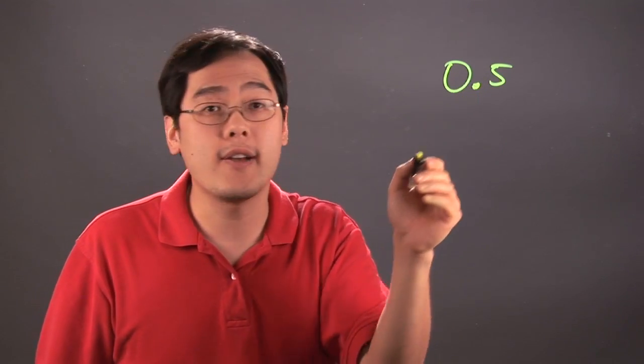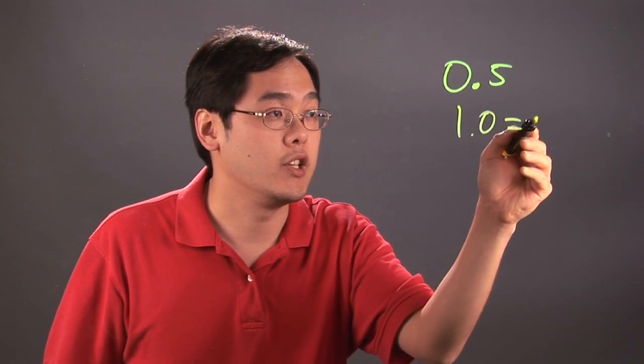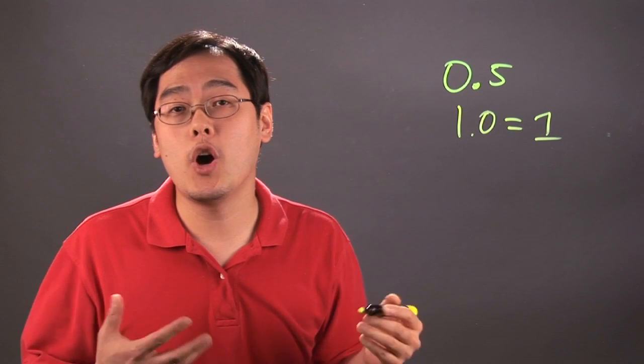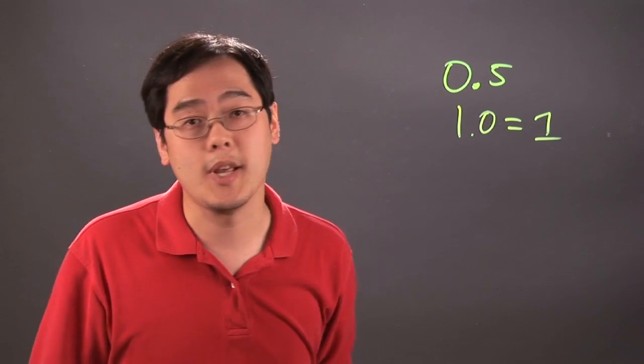So 0.5 rounds to the next whole number, which is 1.0, or you would just write 1. Really, all 0.5 can be rounded to would be the next whole number logically, and that's what you see.